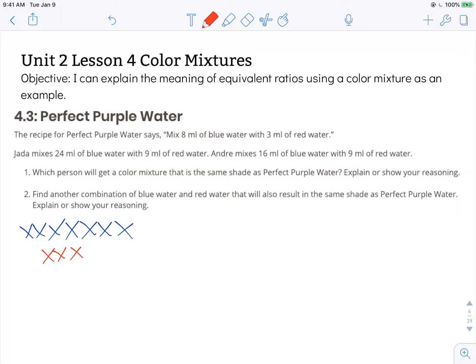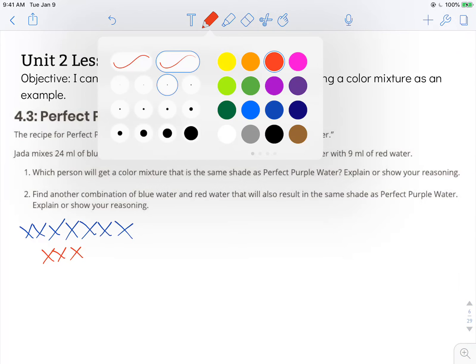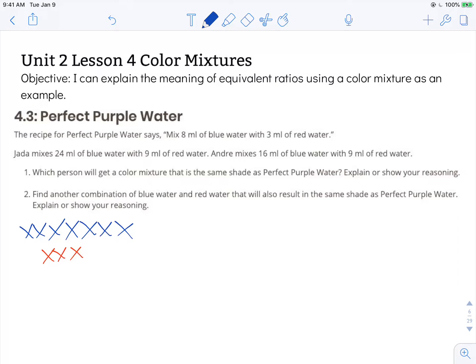Jada mixes 24 milliliters of blue water with 9 milliliters of red water. So let's look at what she did. So we've got this 8 and let's make what she had. So she has 24. So 24 happens to be 3 groups of 8.